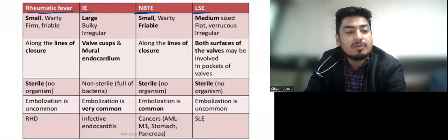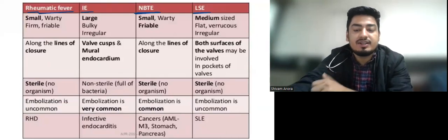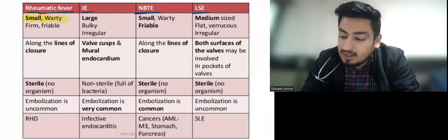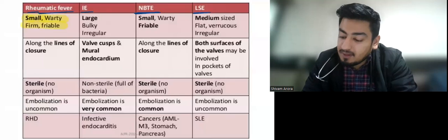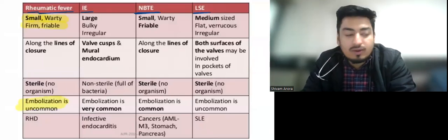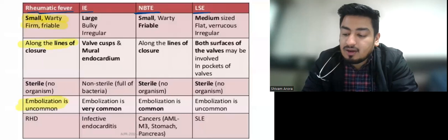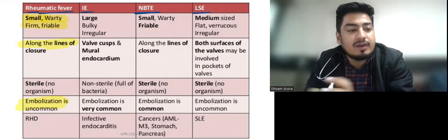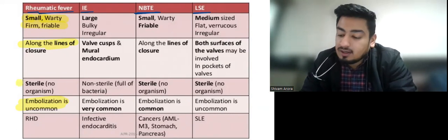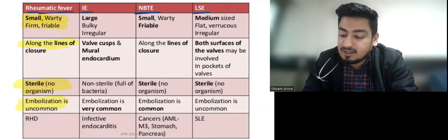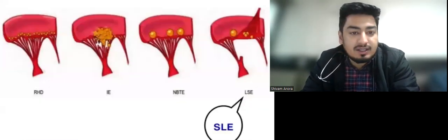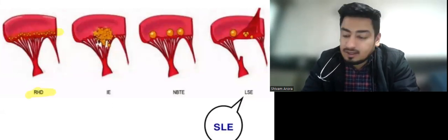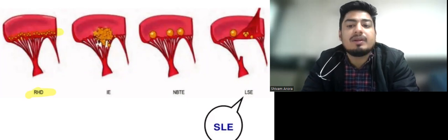In rheumatic fever, the vegetations are small, wart-like, firm, and friable. Since they are firm, embolization is uncommon. They are usually present along the lines of closure where the cusp is attached. They are usually sterile and seen in rheumatic heart disease. As you can see in this image, the vegetations are attached at the line of closure and are very small and firmly attached.